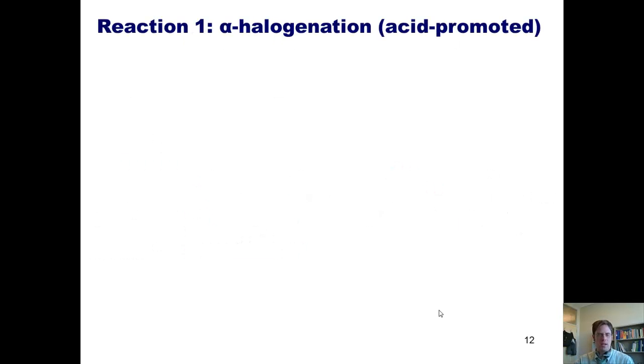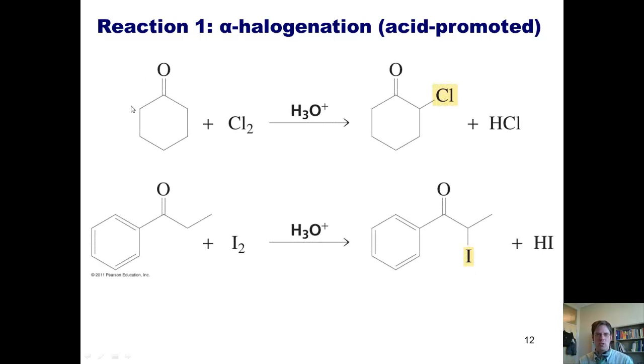The first reaction we'll learn here is the alpha halogenation of ketones, which has to be done under acidic conditions, not basic conditions, for reasons that I'll explain momentarily. Thus, if I treat a ketone with catalytic acid and halogen, such as chlorine, bromine, or iodine, then what will occur is a single one of these protons of the alpha carbon will be removed and replaced with a single one of the halogen atoms.